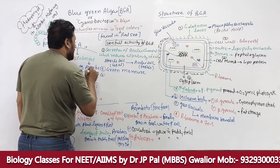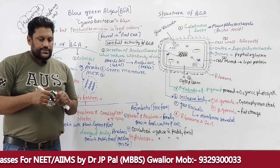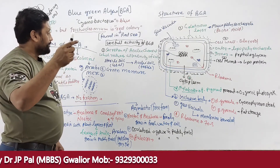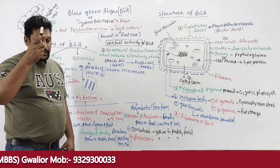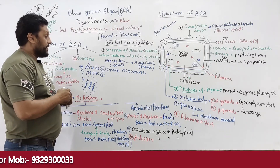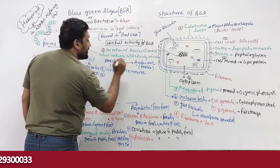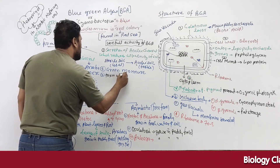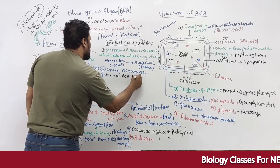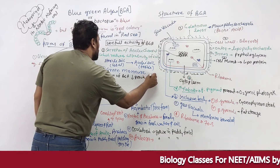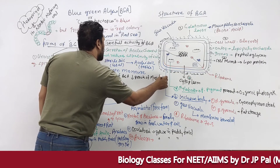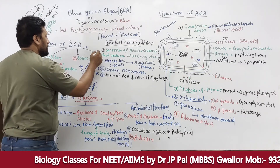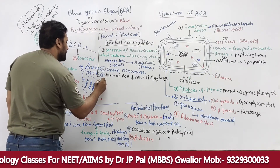Another useful activity: BGA secretes toxins that inhibit the growth of mosquito larvae in fresh water — so it can be used in malarial control. These are the useful importances of BGA.